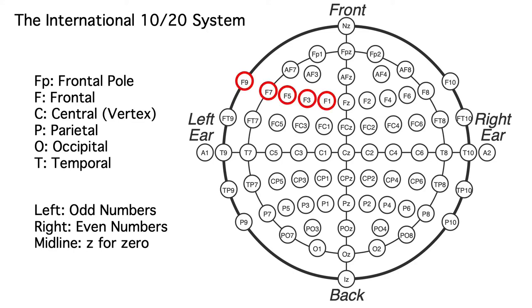For example, as we move away from the midline toward the left side over frontal cortex, we have electrodes F1, F3, F5, F7, and F9.